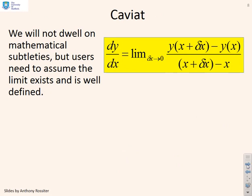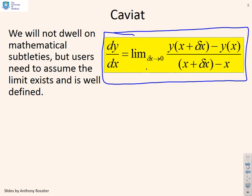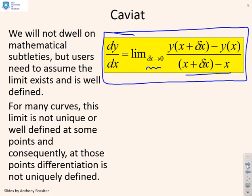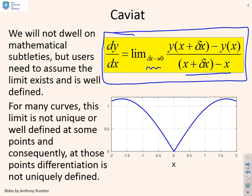So this is the formula we're going to use: the gradient dy/dx is the limiting value as delta x goes to zero of [y(x + delta x) minus y(x)] divided by [x plus delta x minus x]. We won't dwell on mathematical subtleties, but you need to assume the limit exists and is well defined. Sometimes this limit does not exist - for example at a sharp point, the gradient is not uniquely defined because you get a different value approaching from each side. Every now and then a function may not be differentiable at some points.